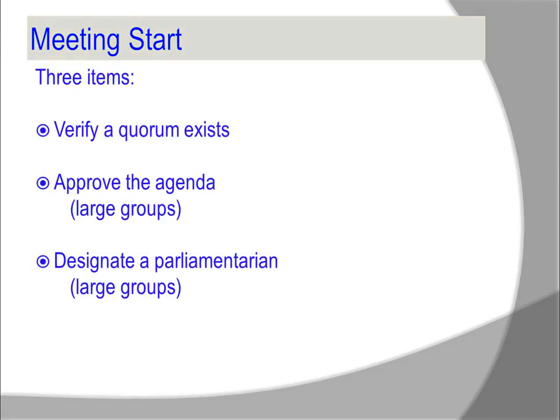How does a meeting start? There are three important items for a meeting. One is to verify a quorum exists — are there enough members present to make business decisions? It may be necessary to approve the agenda, especially important in large groups when time is a constraint. It also can be helpful to designate a parliamentarian for large groups.